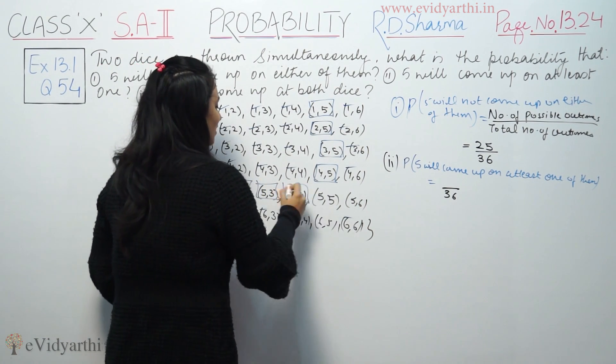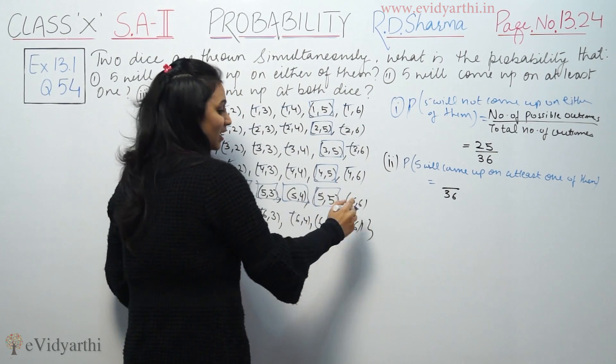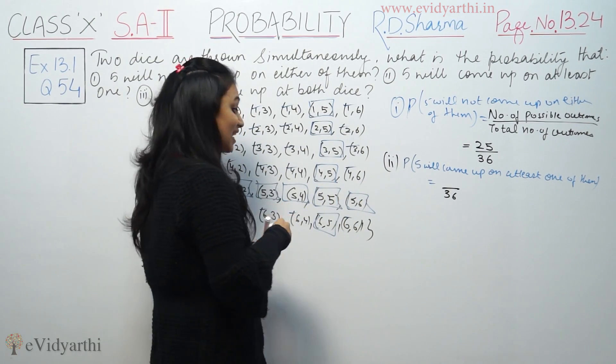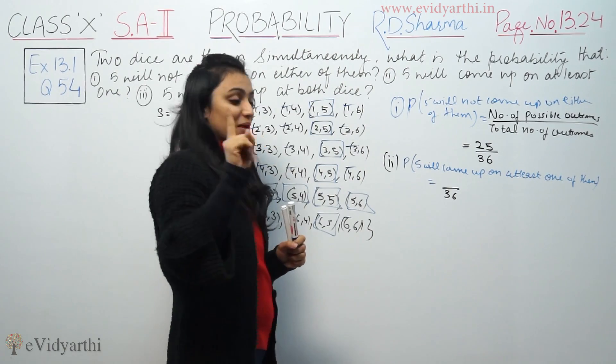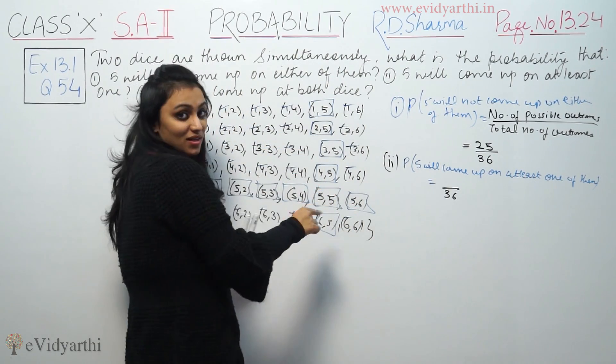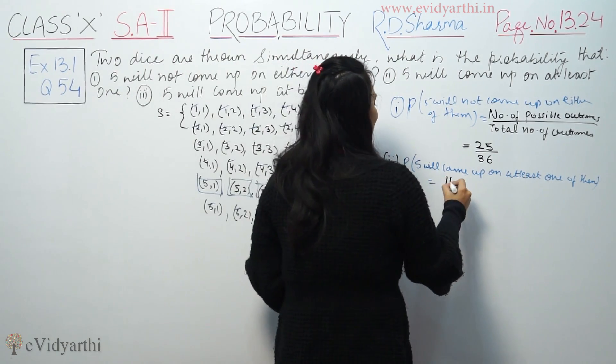Counting: 1, 2, 3, 4, 5, 6, 7, 8, 9, 10, 11. So there are 11 cases where at least one die shows 5. At least one means it can be on two as well. So probability is 11 by 36.